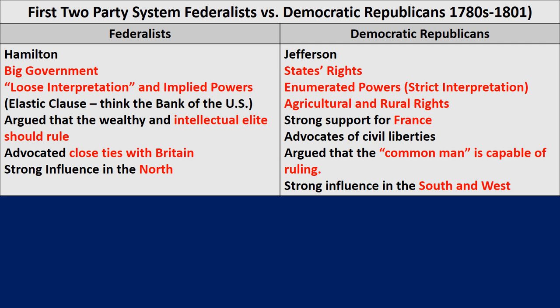In response to this strong central government, you have the formation of the Democratic Republicans, led by people like Thomas Jefferson, advocating states' rights, promoting enumerated powers, and a very strict interpretation of the Constitution — if it's not explicitly written word-for-word, then we shouldn't be doing it. They promoted agricultural and rural rights, were very supportive of France since France helped in the American Revolution. They were advocates of civil liberties, questioned a very strong government, argued that common people should be part of government, and their strong support was in the South and in the West.